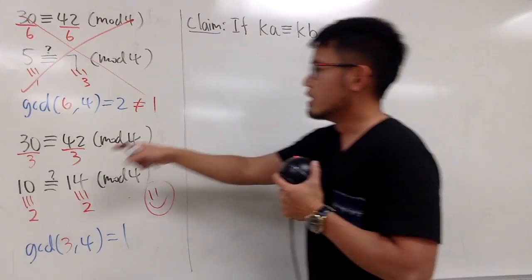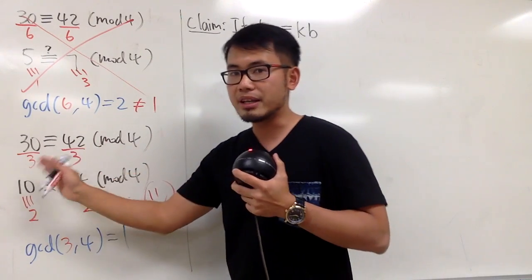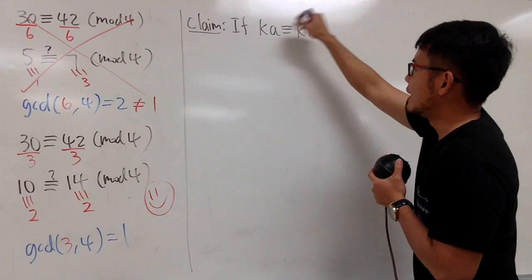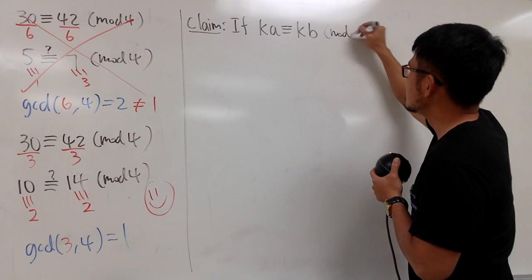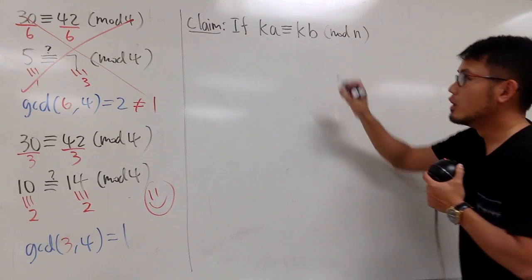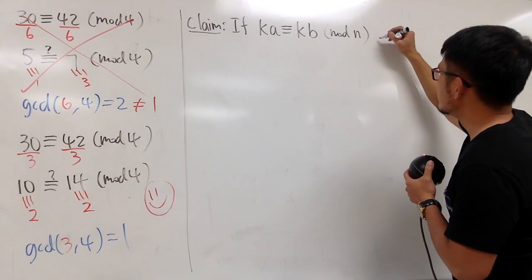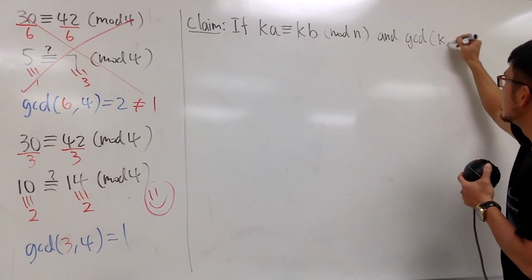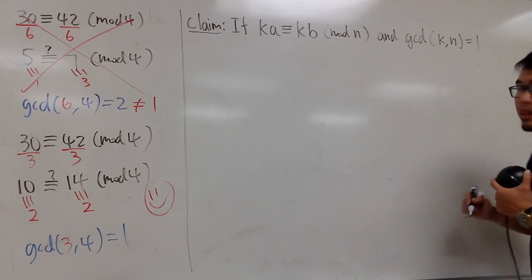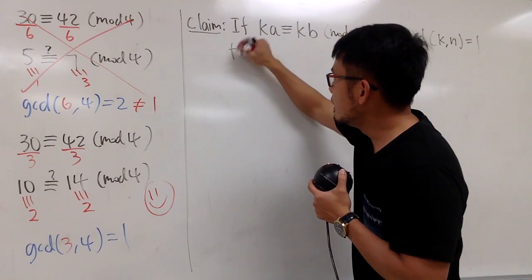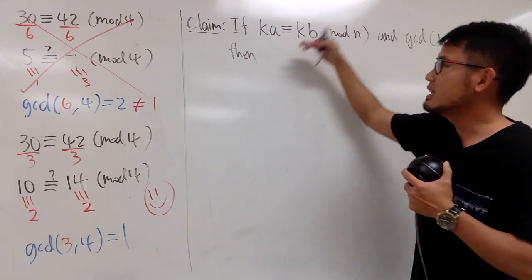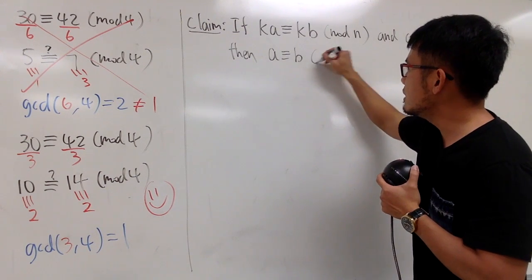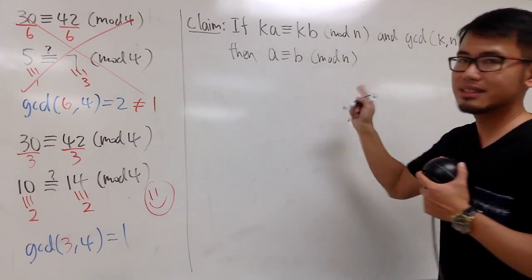Just like this right here, I cannot divide both sides by 11. I cannot do that. So, I have to make sure they have a common factor on both sides. And suppose this is my n, like this. From here, if we have the assumption that the greatest common divisor of k and n being equal to 1, then we are allowed to say that divide this by k, divide that by k. In other words, we can get a is congruent to b, and this is still true, mod n, like this.